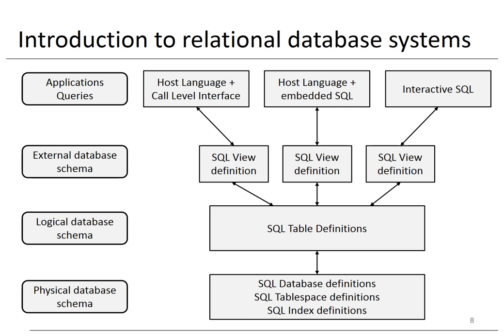At the logical database level, we have SQL table definitions, whereby a table corresponds to a relation from the relational model. At the external database level, SQL views will be defined, which essentially offer a tailored set of data for one or more applications or queries. These levels should be connected but loosely coupled such that a change in one level has minimal to no impact on all other levels above.